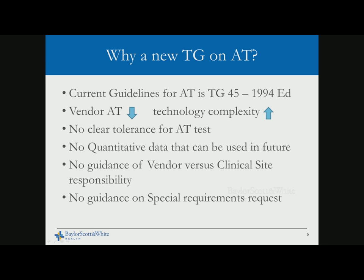Although there is no clear tolerance for acceptance testing — we have recommendations from TG 142, TG 106, and others — when vendors use their own proprietary tools and phantoms and calculate tolerances on their own criteria, it is very difficult to compare what is acceptable. Another issue is quantitative data for future use: if a major part changes three years later, is there any way to quantitatively compare how the LINAC was during acceptance testing and now after that part change?